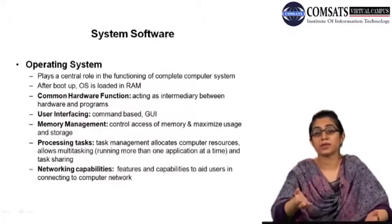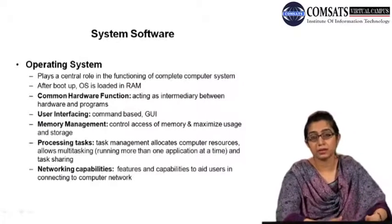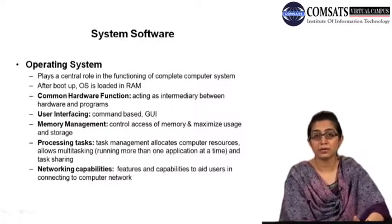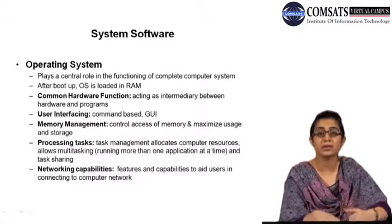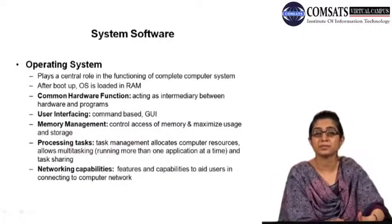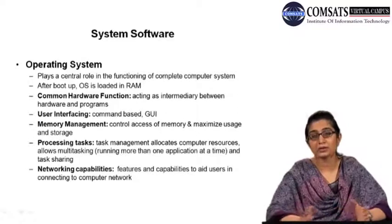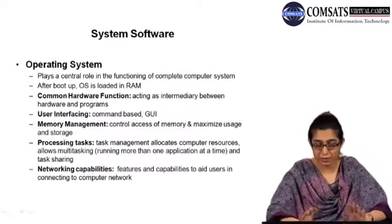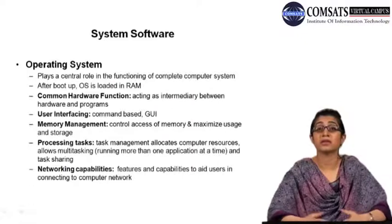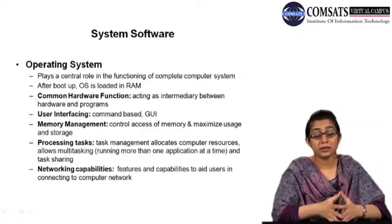For example, virtual memory: if your memory is overloaded and there is not enough space to run programs, then a certain portion of the hard disk is allocated to act as RAM. It's not physically allocated but it increases the functional capability of the RAM — the hard disk supports and acts as RAM itself, though the access rate is different and the programs would run a bit slower. This does slow down your computer to some extent, but somehow manages to allocate memory to different programs that are running.